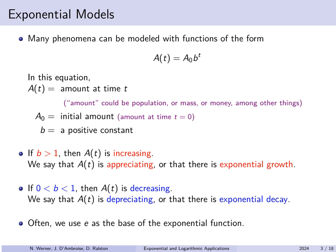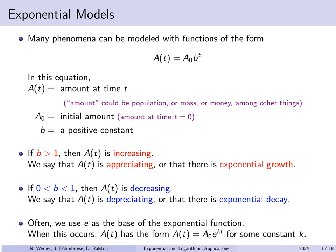Often we use e as our base. When we do, our function takes the form a(t) = a₀ · eᵏᵗ, where k is some constant. This may look different from the b-to-the-t form, but they correspond: since b = e^(ln b), we can write a₀ · bᵗ as a₀ · e^((ln b)·t). So any expression of the form a₀ · bᵗ can be rewritten as a₀ · e^(kt), which is why e serves as our standard base.